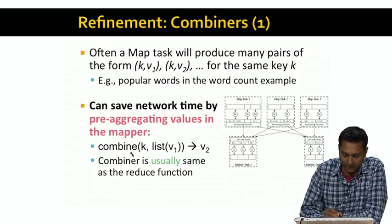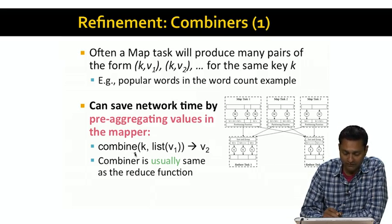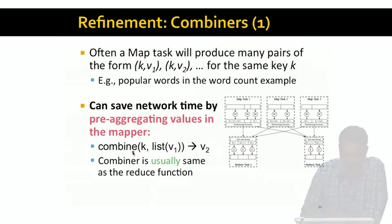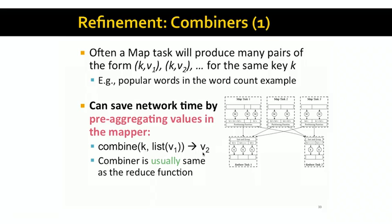The combiner is supplied by the programmer. The programmer provides a function, combine. The input to the combiner is a key and a list of values, and the output is a single value. So instead of a whole bunch of tuples with the key k being shipped off to a reducer, just a single tuple with key k and its combined value is shipped off to the reducer.